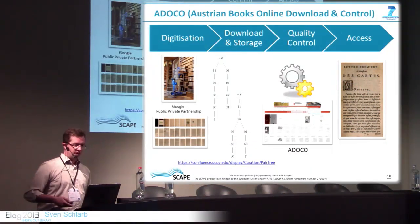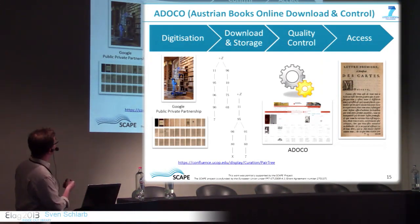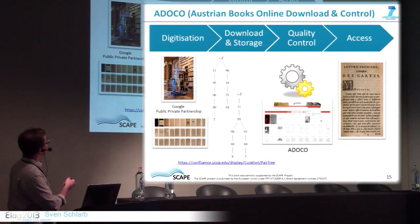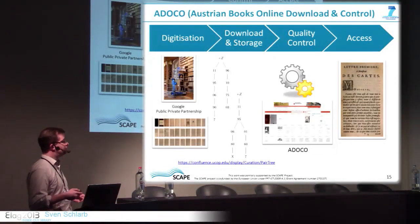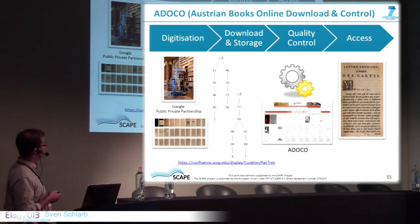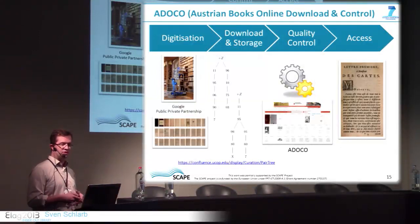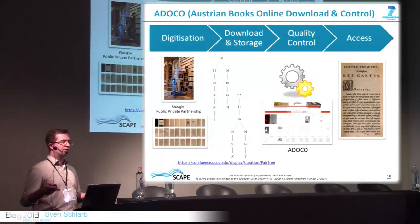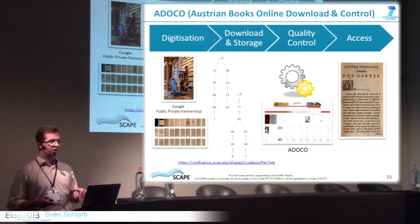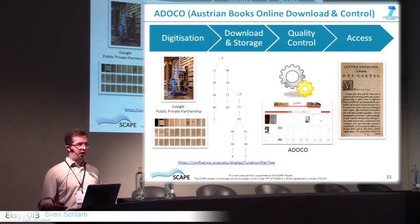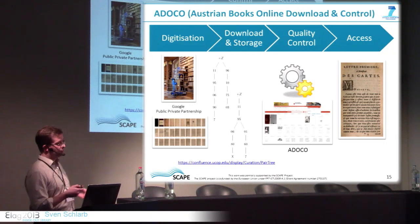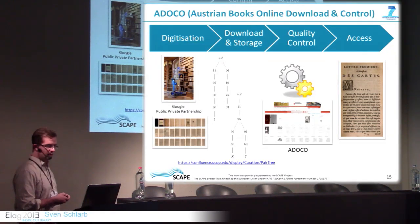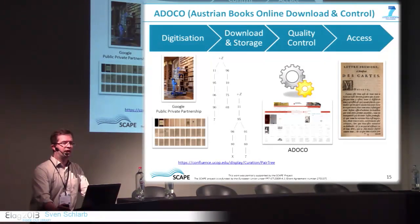In the Austrian Books Online project, digitization is done by Google in the public-private partnership. We store data from HathiTrust in a pear tree — an efficient, scalable way to store data on file servers. We apply automatic quality control procedures to find specific problems and report systematic failures to Google early in the project, when there's a good chance Google can correct such errors. The purpose is ultimately to make the files accessible — we now have a viewer online with the first 100,000 books.